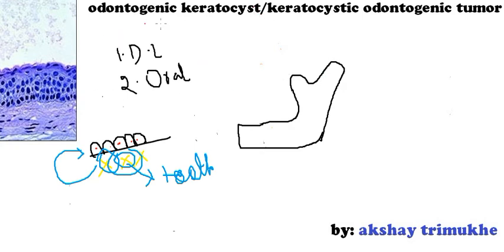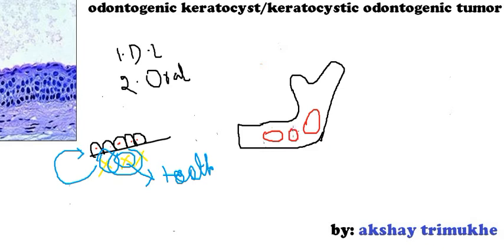Now let us start with the clinical features of OKC. Odontogenic Keratocyst can occur at any age, from younger to elder patients. It has more predilection towards the mandible — specifically the ascending ramus and the posterior side — and is more commonly seen in the mandible rather than the maxilla. It is more commonly associated with third molars than with first or second molars. If you find multiple Odontogenic Keratocysts, you should always suspect Basal Cell Nevus Syndrome, also called Basal Nevoid Cell Carcinoma Syndrome, as that is a very serious condition.